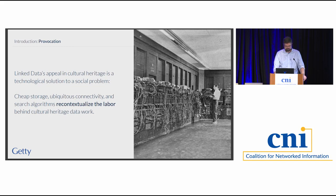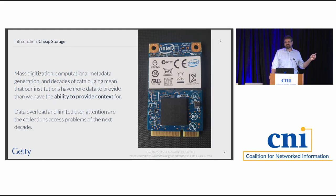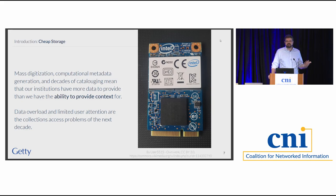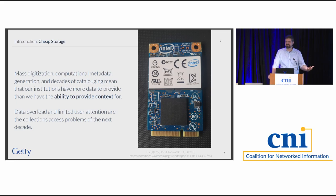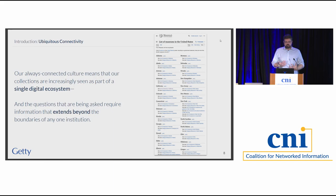We live in a world where there's cheap storage — a hard drive the size of a postage stamp holds what a library used to hold. We live in a world of mass digitization where we can use computational techniques like AI to generate metadata. We've been cataloging records for decades, which means we have more data in our institutions than we have the ability to provide context for. That data overload and limited user attention are the collections access problems we're looking at in the next decade.